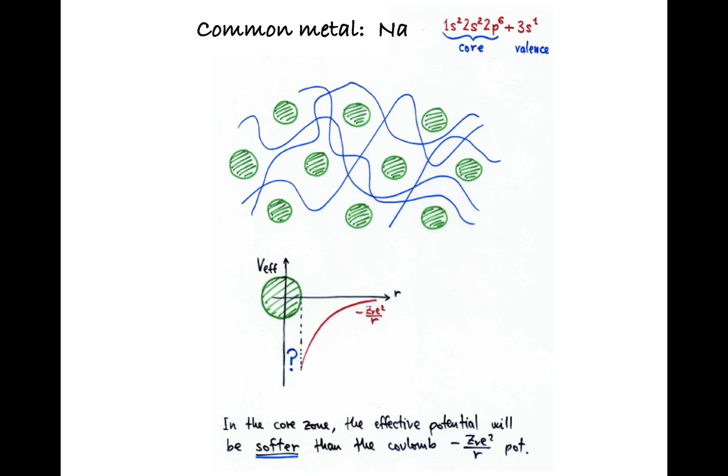The first thing to notice is that for most systems, you're going to have a lot of savings just by forgetting about the core electrons. In particular for sodium, out of the 11 electrons in the atom, you can forget about 10. And you describe this valence electron, the 3s, as flying through the crystal, feeling some kind of effective potential.